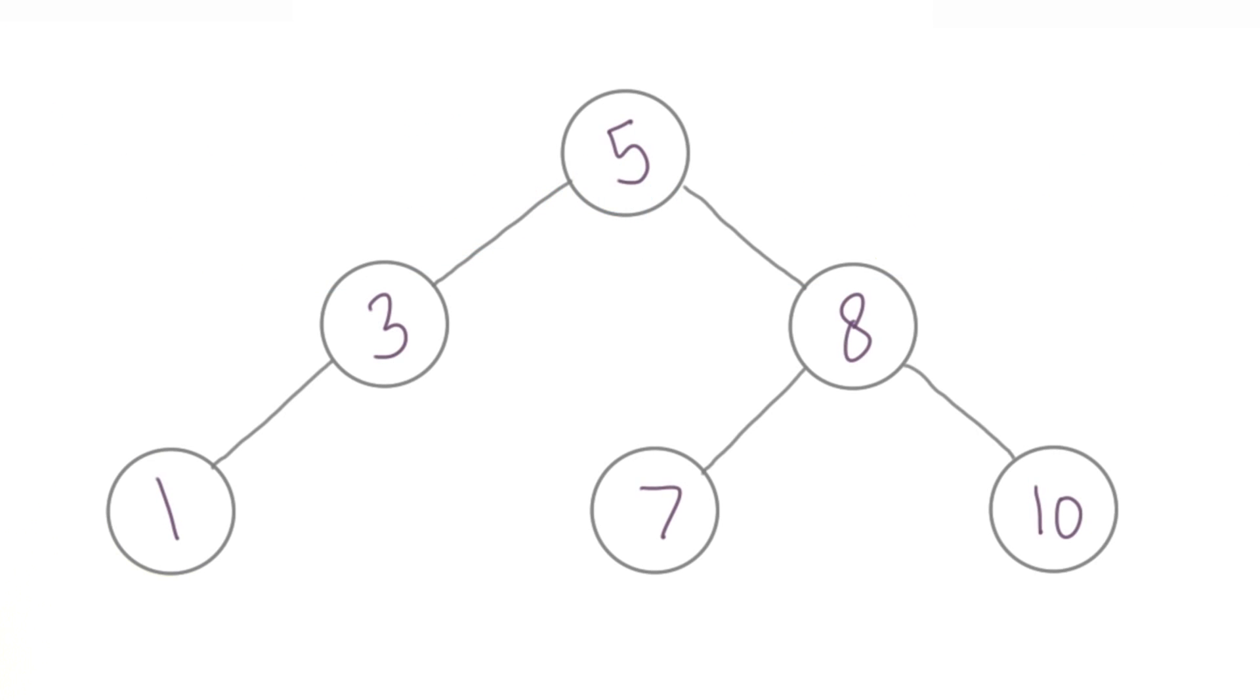There's a specific rule for how the values associated with each node are arranged. BSTs are sorted, so every value on the left of a particular node is smaller than it, and every value on the right of a particular node is larger than it.